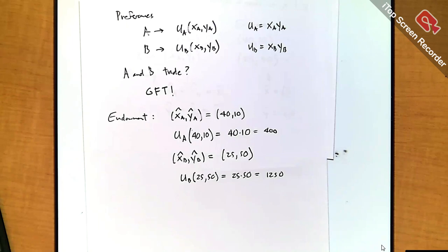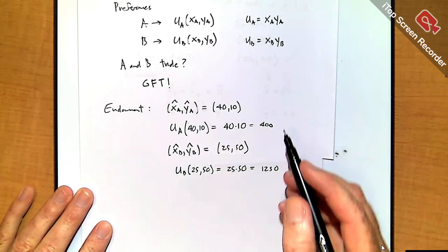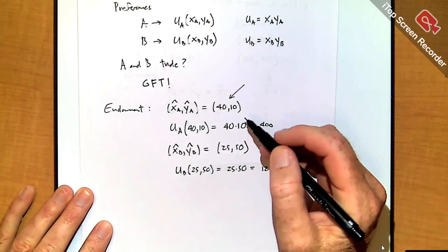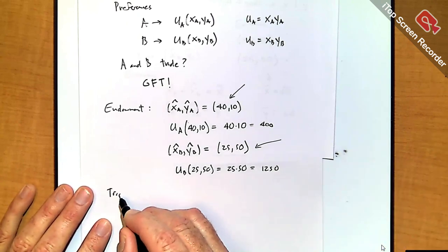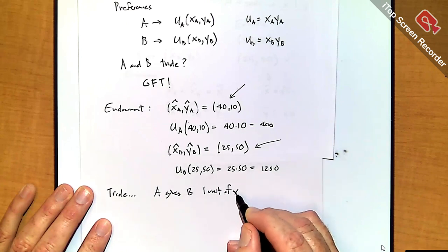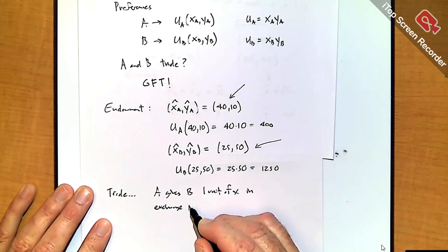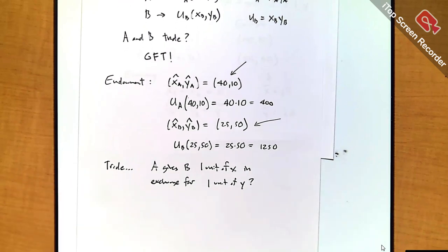I picked numbers where A is a little heavy on X and light on Y, and B is a little lighter on X and heavier on Y. So let's consider this trade: A gives B one unit of X in exchange for one unit of Y. That's a possible trade to investigate, and it should be interesting as long as it boosts both A and B's utility. Let's check whether we get gains from trade on both sides.